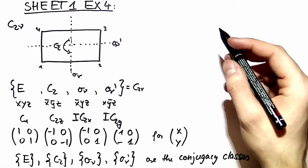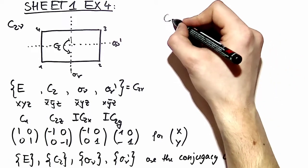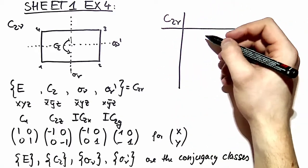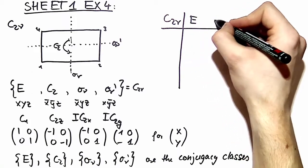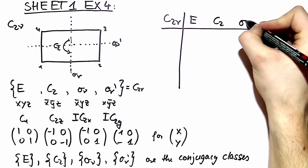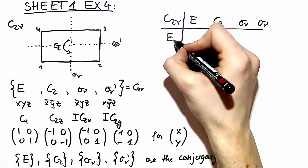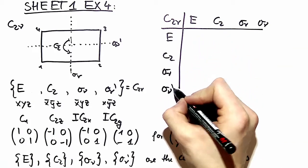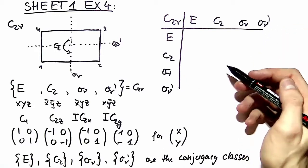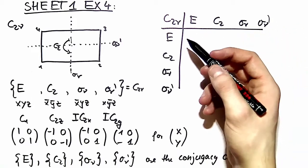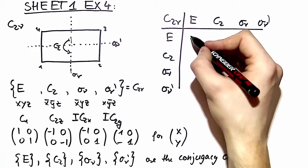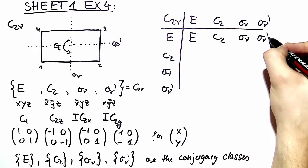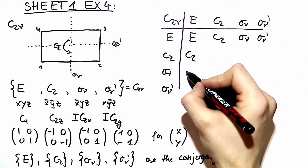When looking for the multiplication table of C2v we proceed as in the lecture, and because of the property of the identity element we can simply copy the first row and the first column.